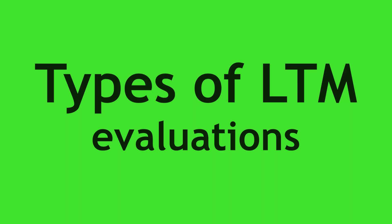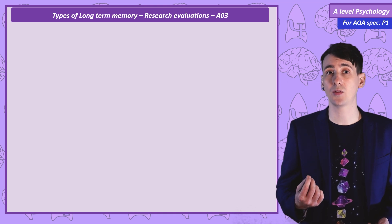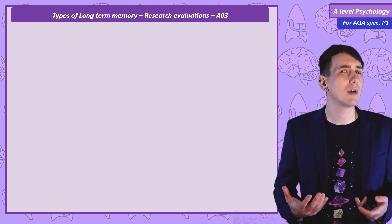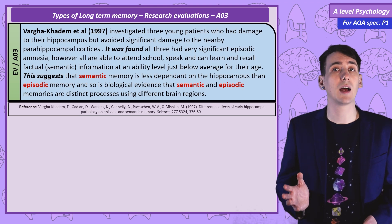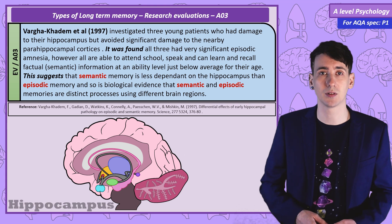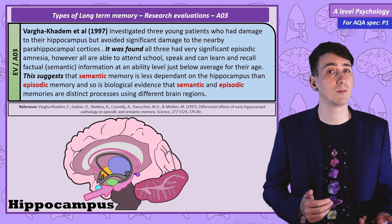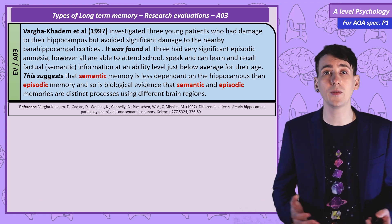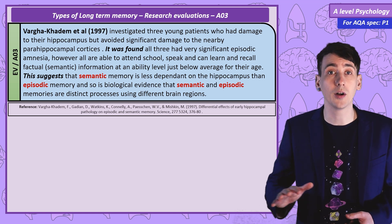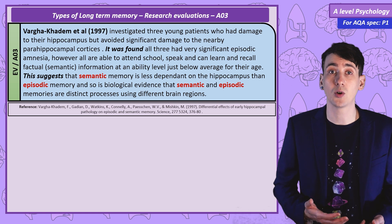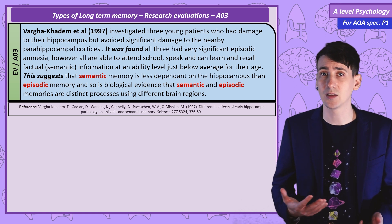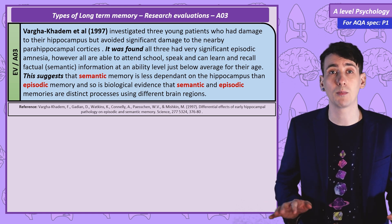Evaluating types of long-term memory: to evaluate, we want to look at evidence that suggests these three types of long-term memory are truly separate and whether we can trust that research — but also whether there are any reasons to think they're not actually distinct. Firstly, we have research by Vergara Kadim, an investigation of three young amnesic patients who had all suffered damage to their hippocampus, but a nearby region called the parahippocampal cortices was reasonably undamaged. It was found that all of these children had significant episodic amnesia, but they were all able to attend school because their semantic ability was largely unaffected. They learned to speak and could recall factual information at a level just a little below normal for their age. These results suggest that episodic and semantic memories are separate processes that function using separate brain regions.